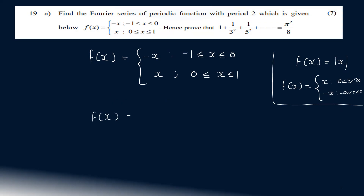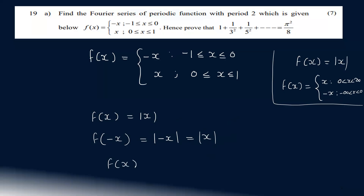So f of x equals mod x — this is the modulus function. This is an even function. Because f of minus x equals mod of minus x, and if the mode is negative we change the sign, so mod of minus x equals mod x. That is, f of minus x equals f of x. So we call this an even function.